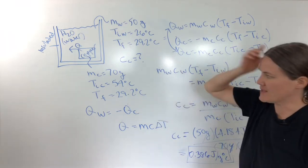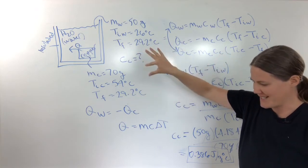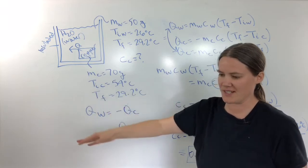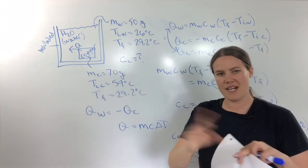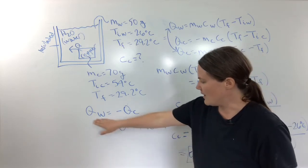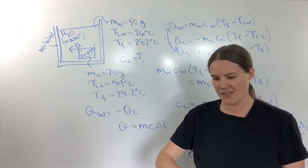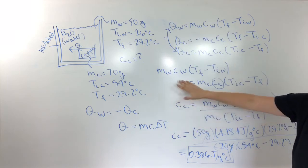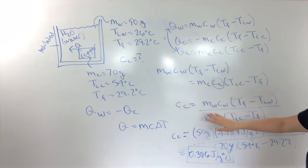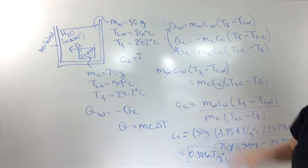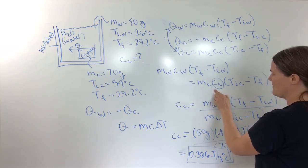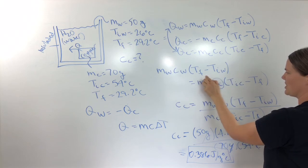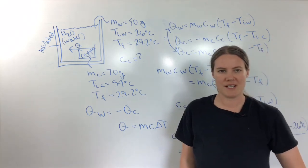In summary, with these mixing problems — whether mixing water with water or a solid with a liquid — if you have heat exchanged between two substances, say that the heat lost from one equals the heat gained by the other, then use Q = mcΔT. Write out your equations, set the two Q's equal, and solve for whatever you're looking for. Here we solved for the specific heat of copper, but if we needed the final temperature, we would have solved for that instead. I hope this was helpful, thanks for watching.